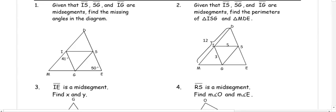This video is a review for the Unit 7 test. Given that IS, SG, and IG are mid-segments, find the missing angles.